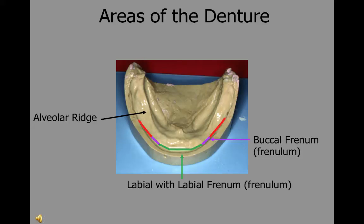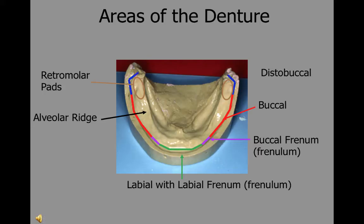Just posterior to the frenum, that area lateral to where the posterior teeth would have been is referred to as the buccal area of the denture. The retromolar pads are a prominent landmark of the next area, referred to as the distal buccal area of the denture. When we turn the corner, this area is called the distal lingual area of the mandibular denture. There is a depression lingual to the retromolar pad called the retromylohyoid fossa.